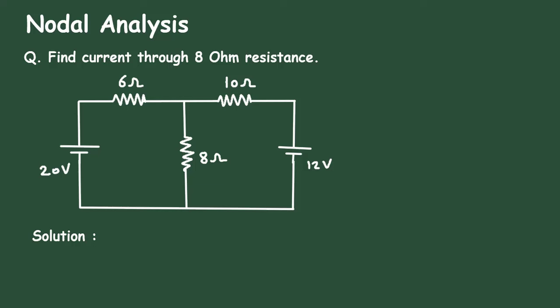To get the free nodes of electrical circuits, check the link in the comment section and install the app for free. Nodal analysis question: find the current through 8 ohm resistance. Here in this circuit, we have to find the current through this 8 ohm resistance by using the nodal analysis method.